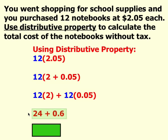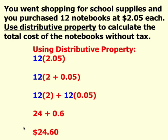Continue simplifying. 12 times 2 is 24. 12 times 5 cents is 60 cents. And the final sum of these 12 notebooks is $24.60.